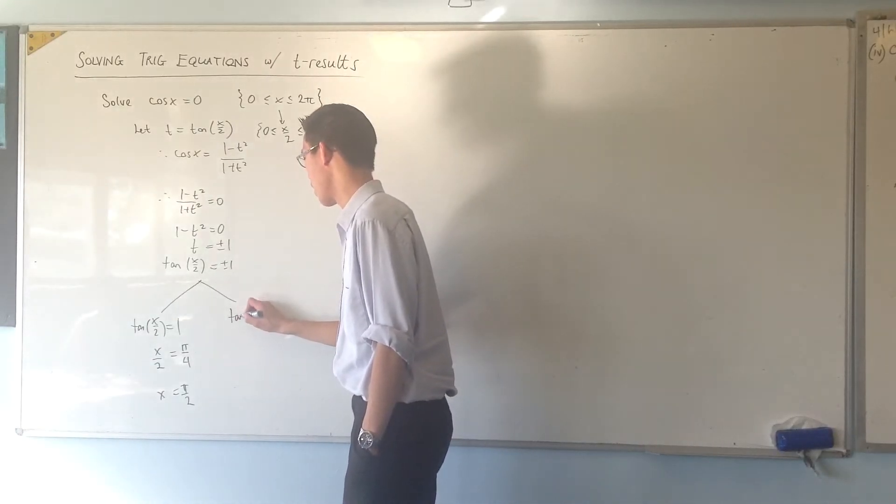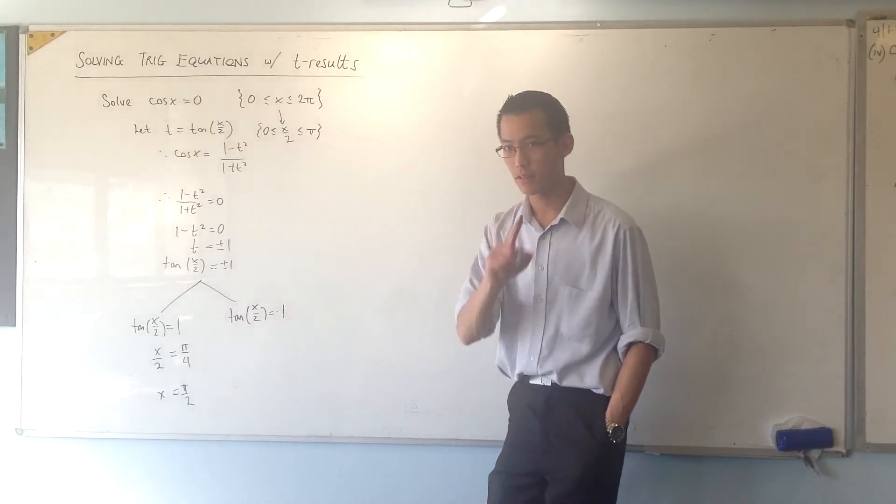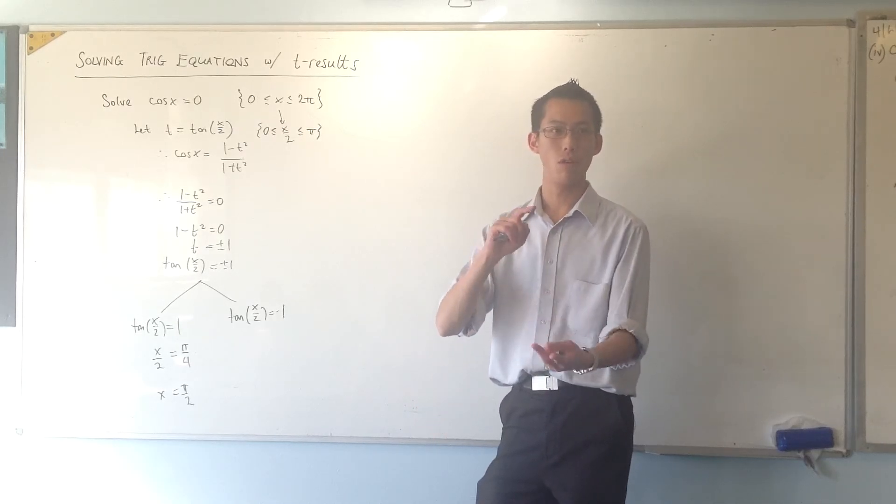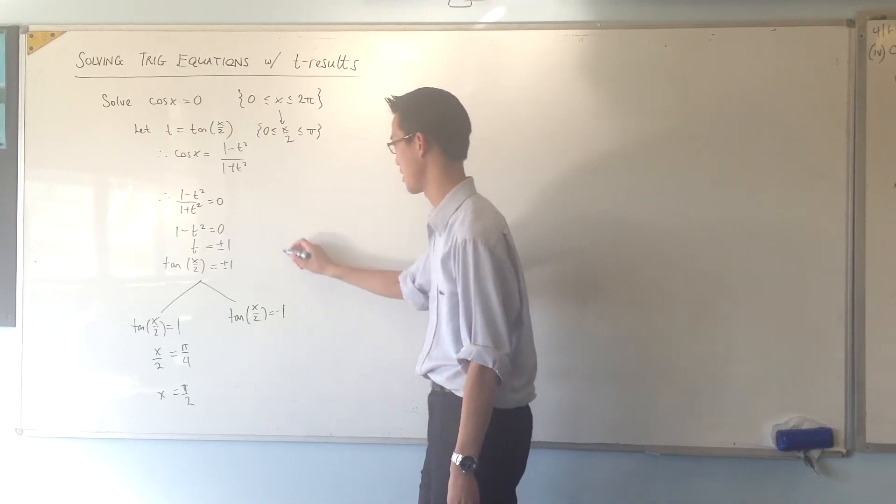Now, I'll do the other one. Tan of x on 2 is equal to minus 1. You might be a little less familiar with that. So, maybe think back to either your graph or your quadrants. So, maybe in this case, because I'm a bit of a fan of graphs, I'll do quadrants just for the sake of it.